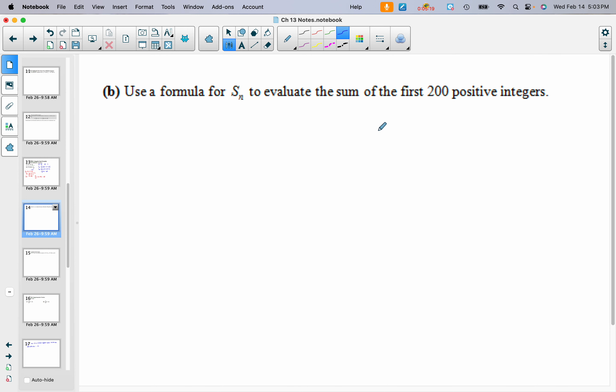Part B, use a formula for Sₙ to evaluate the sum of the first 200 positive integers. So let's think about what that looks like. We've got 1 plus 2 plus 3 plus 4 plus dot dot dot plus 198 plus 199 plus 200.